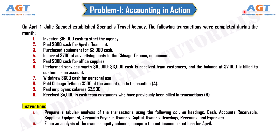Welcome to Academic Game Tutorials. In this Principles of Accounting lecture, we will go through and solve this accounting problem. The problem states that on April 1st, Julie Spengel established Spengel's Travel Agency. The following transactions were completed during the month, and here we have details of 10 transactions that took place during the month.